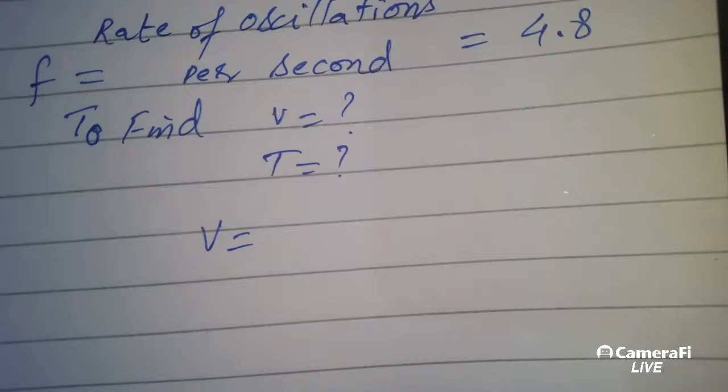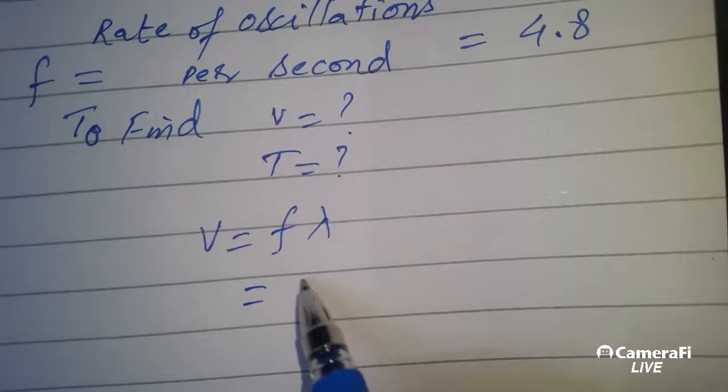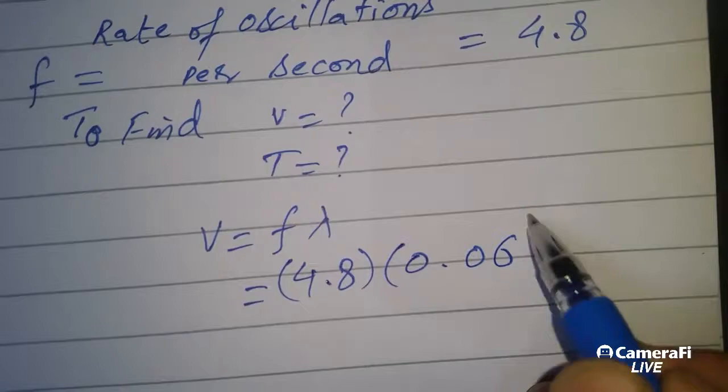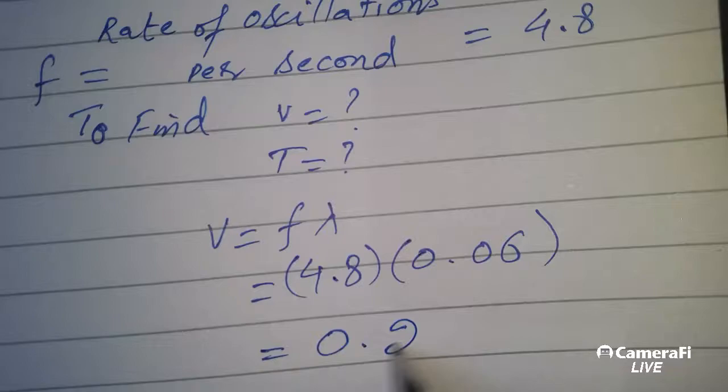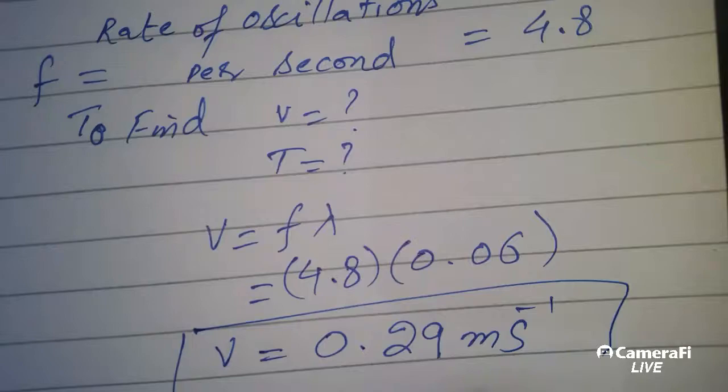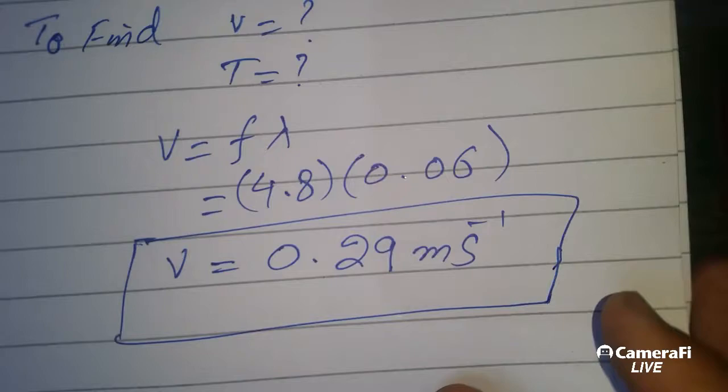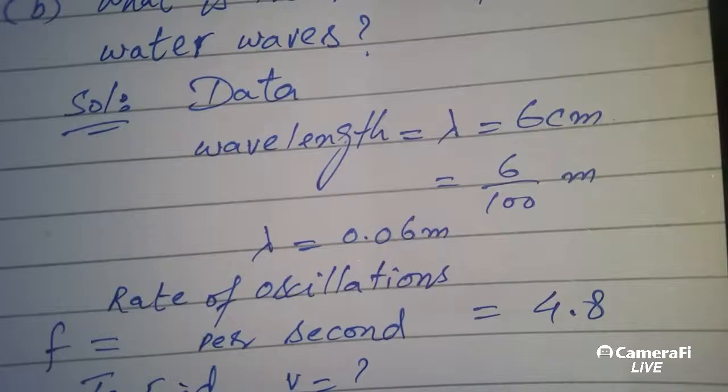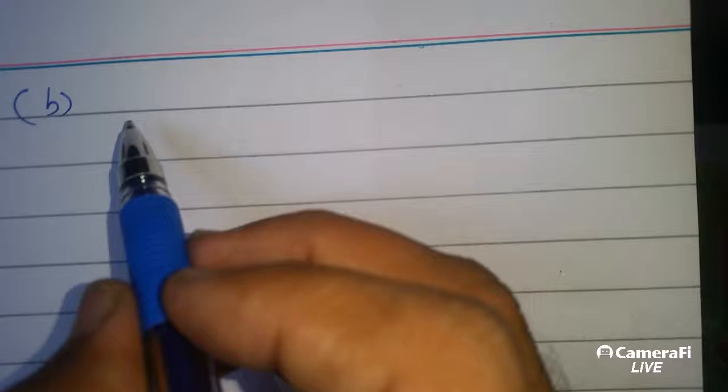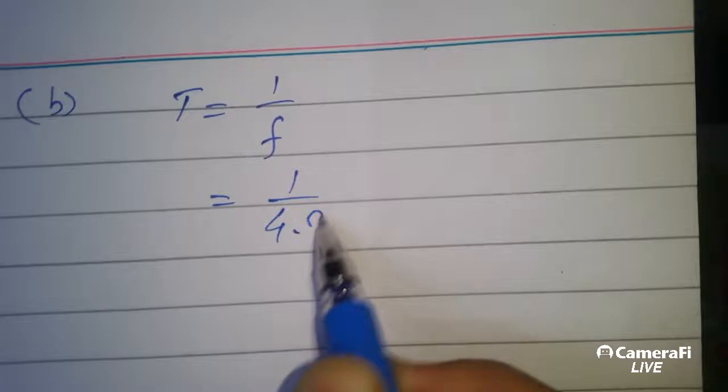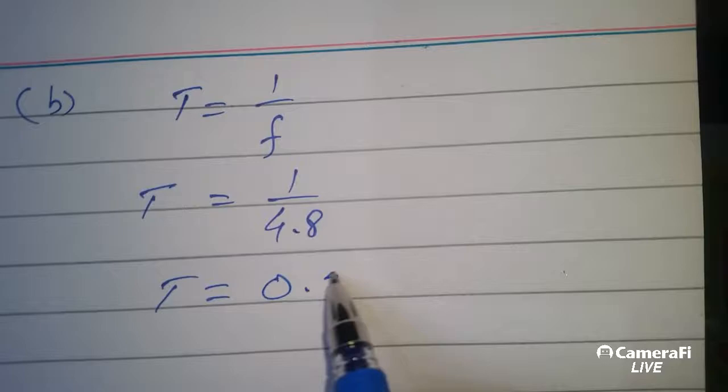V is equal to f lambda: 4.8 times 0.06 equals 0.29 meter per second. Part (b) time period is equal to 1 over f, 1 over 4.8 equals 0.21 second.